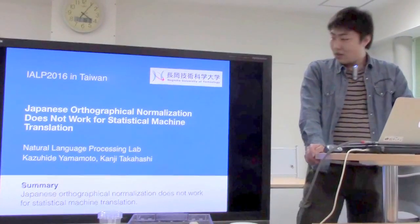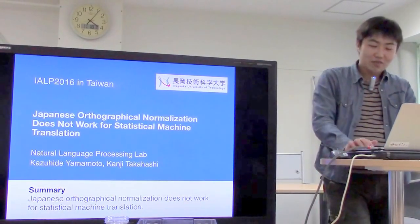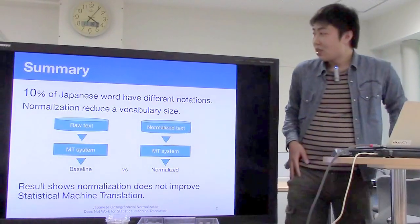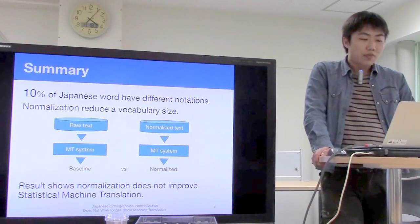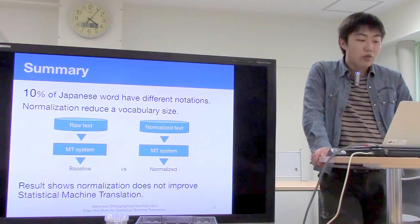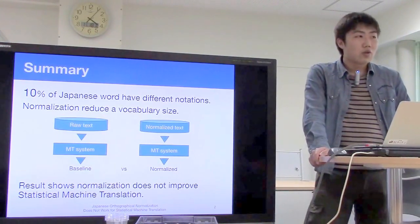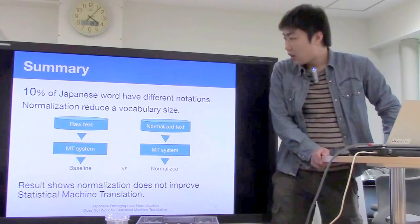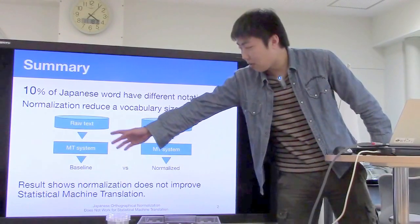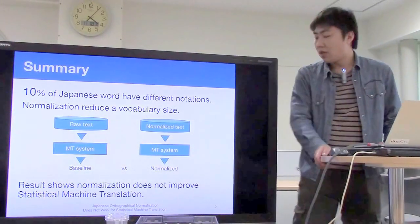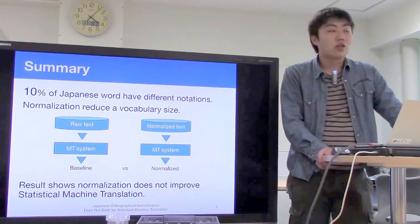To summarize: in Japanese, 10% of Japanese words have different notations, and normalization reduces vocabulary size. So we investigate the effect of normalization on statistical machine translation. We compared two experimental sets — one is a raw-text experiment and the other is a normalized-text experiment. The result shows normalization does not improve statistical machine translation.